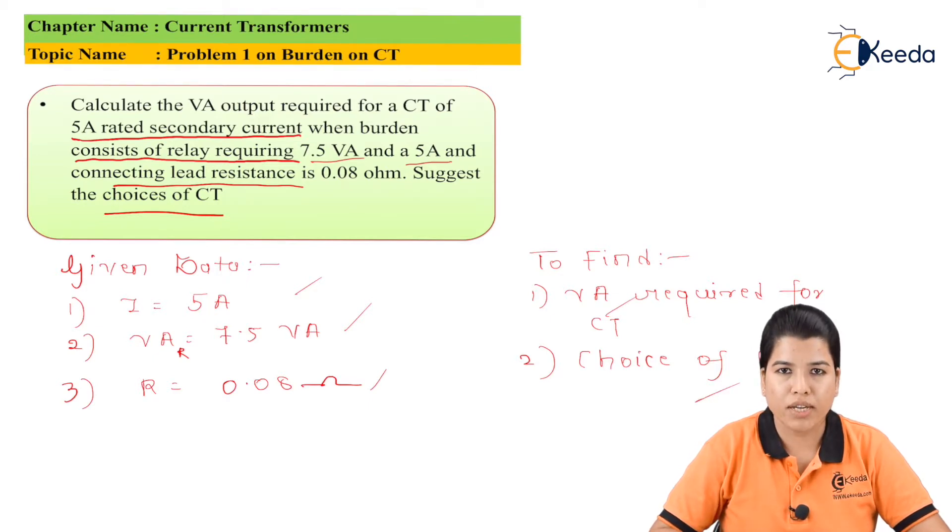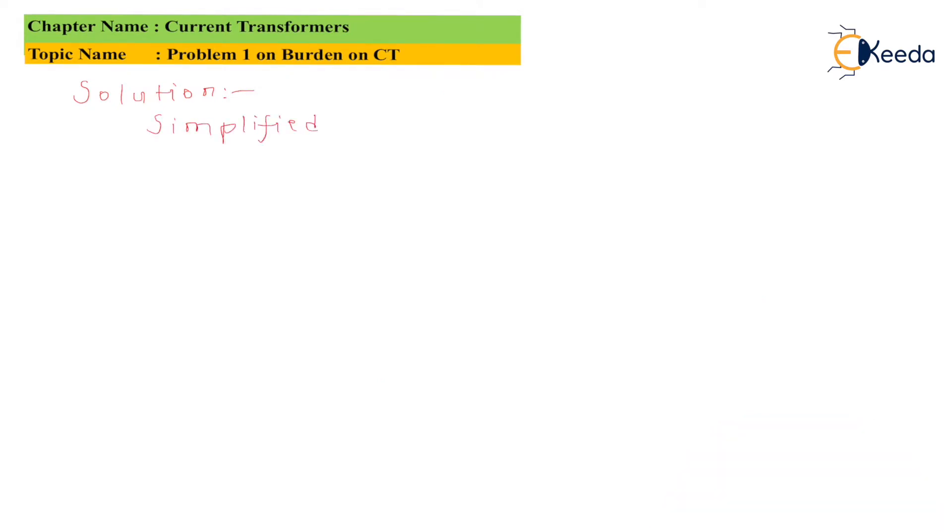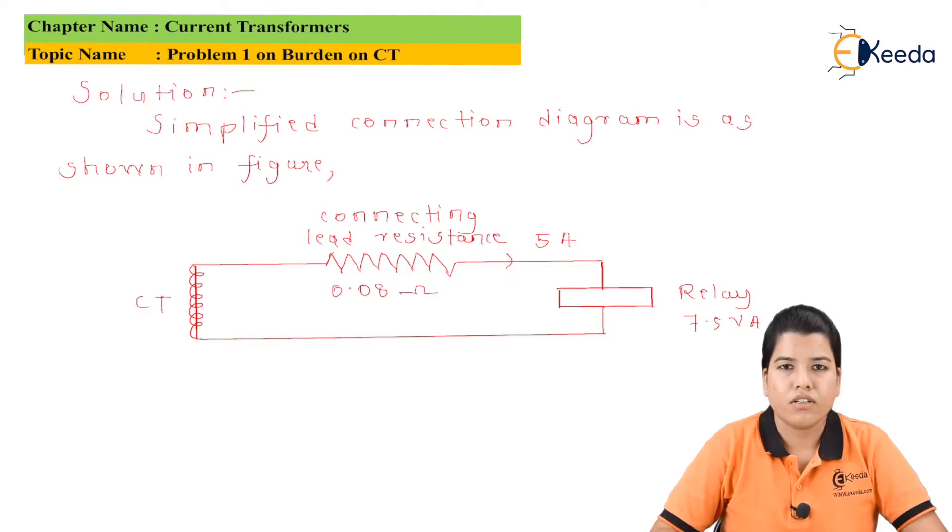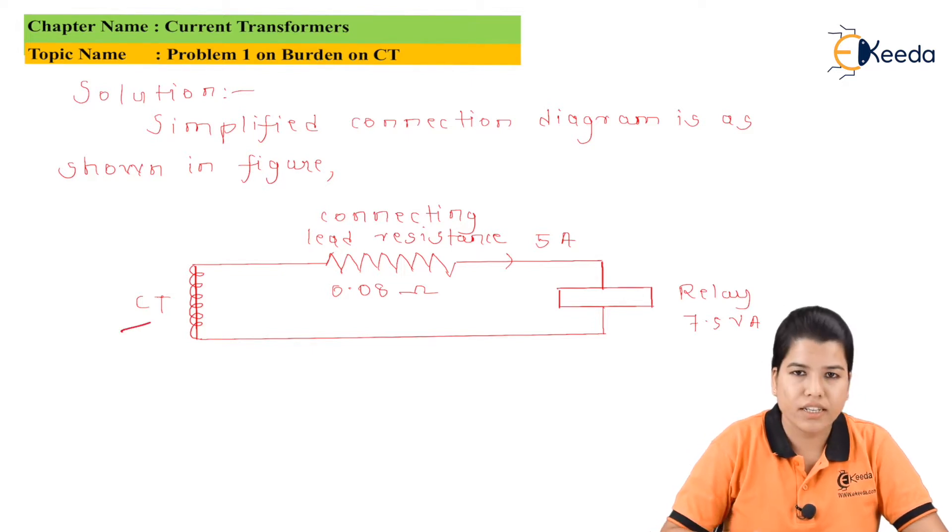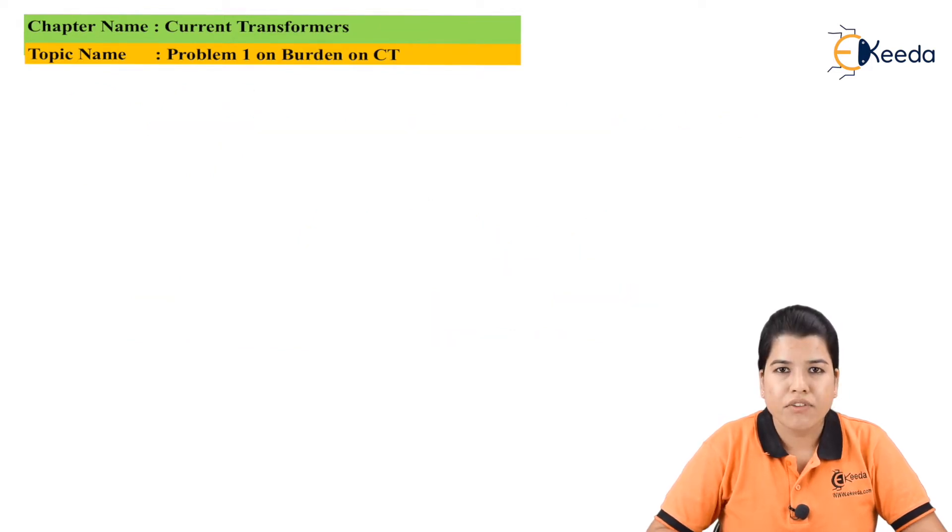Now let us solve this problem. First of all let us draw the simplified connection diagram. The simplified connection diagram is as shown in figure. The figure shows CT, then connecting lead resistance which is having the 0.08 ohm rating, 5A is the current, then the relay with VA of 7.5 VA.